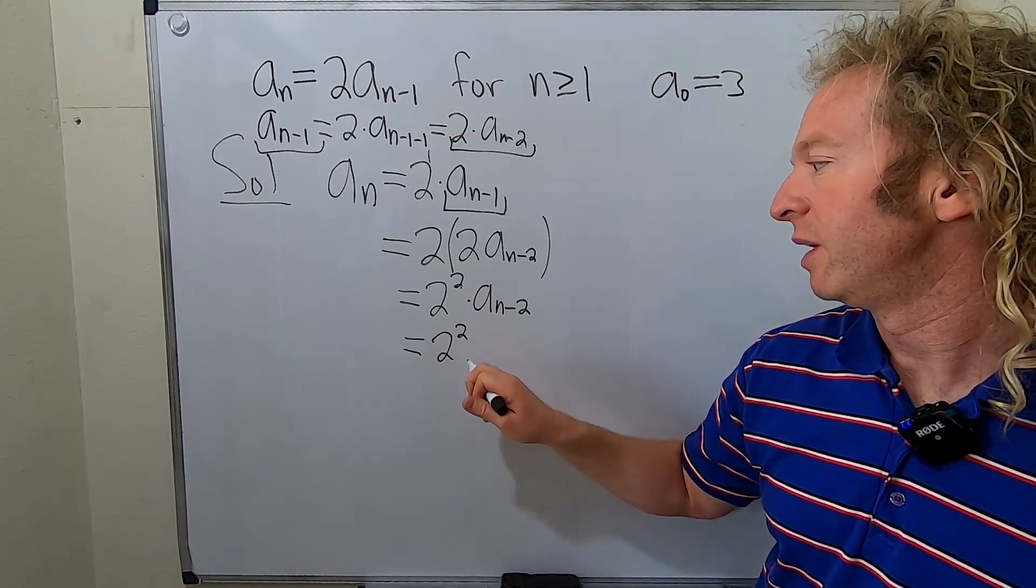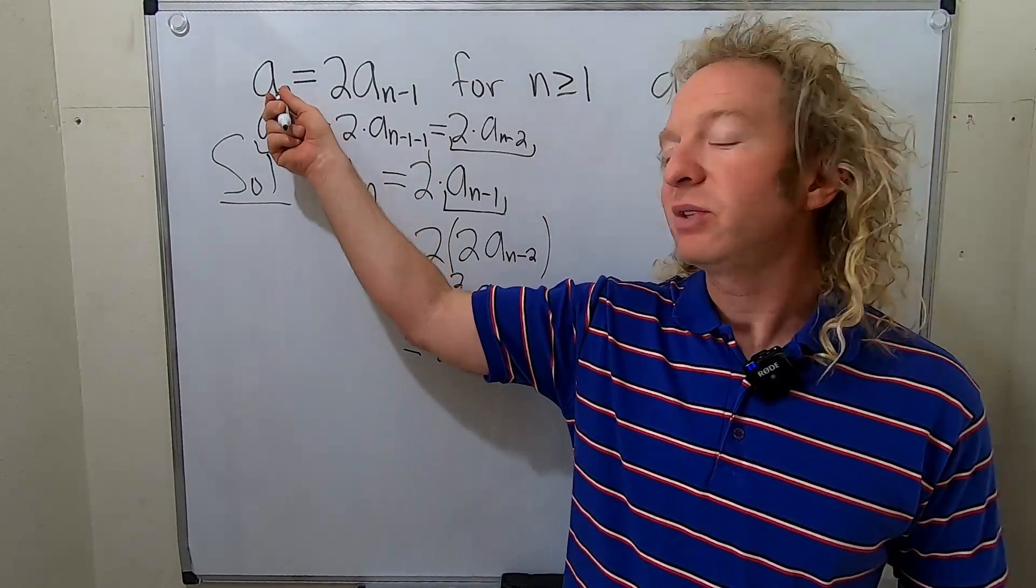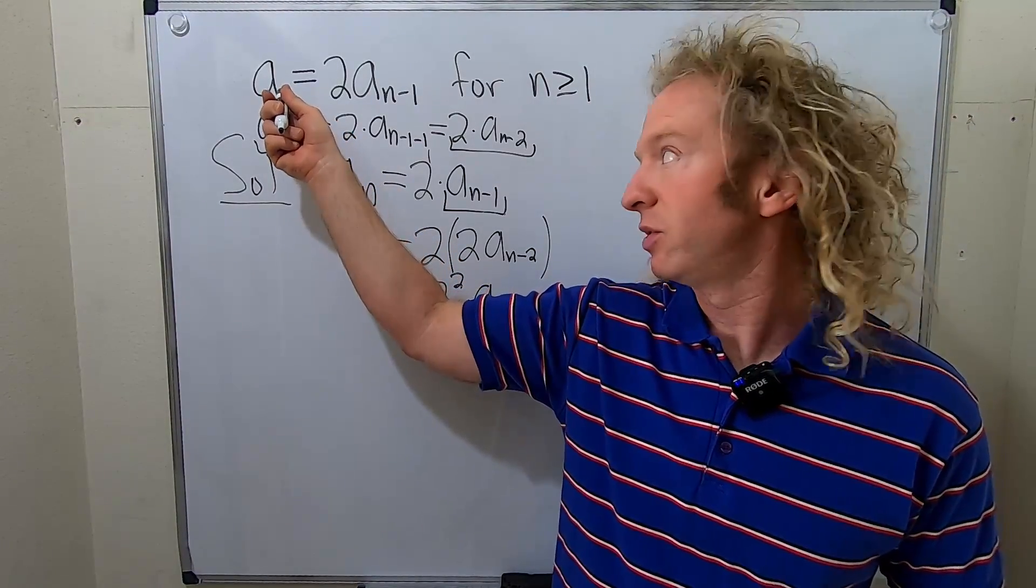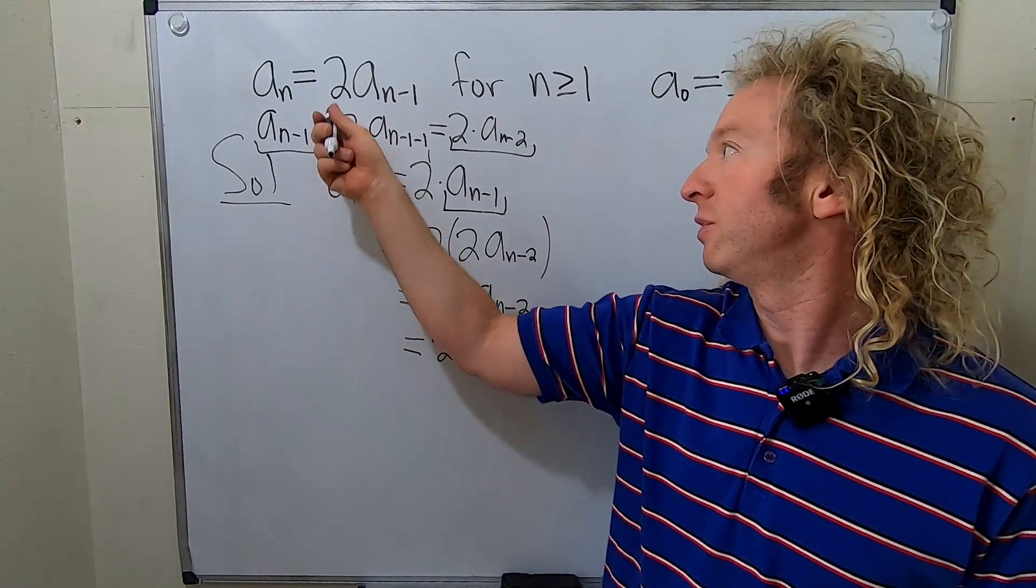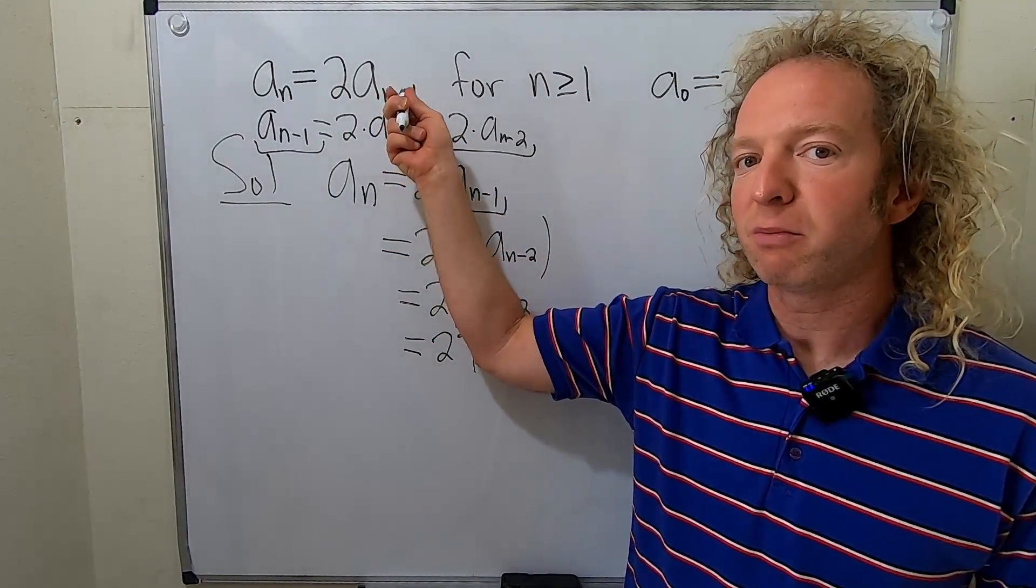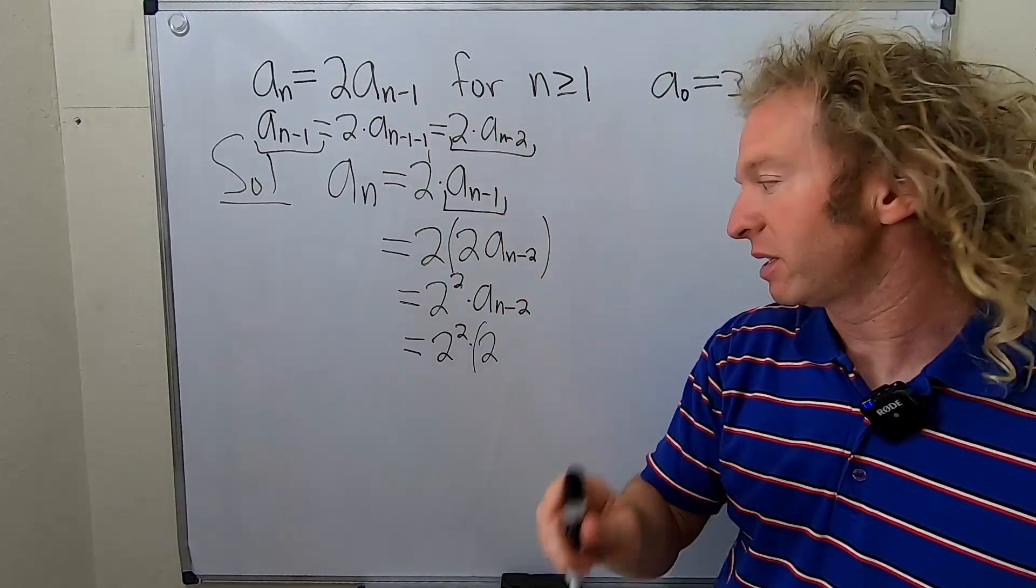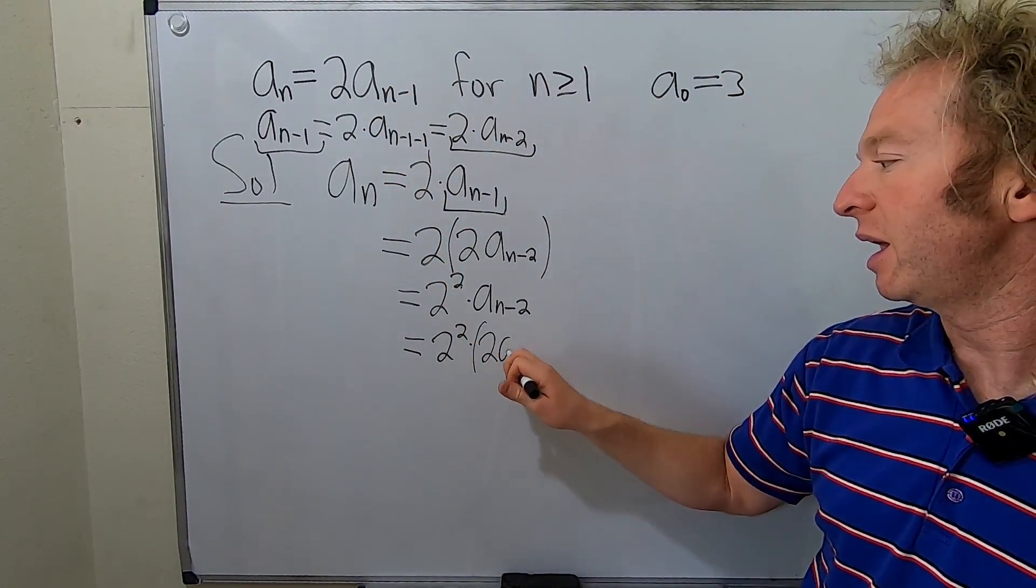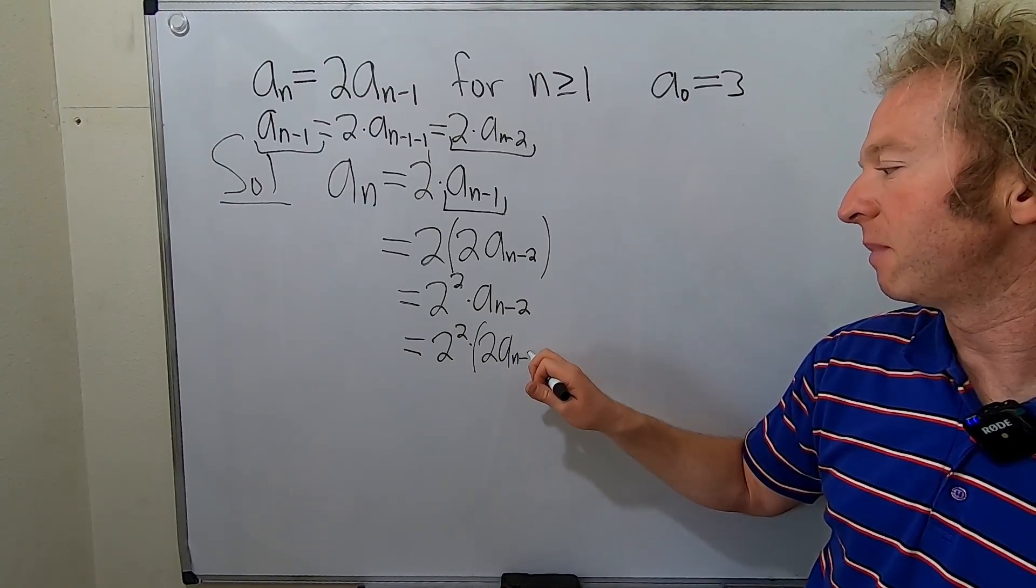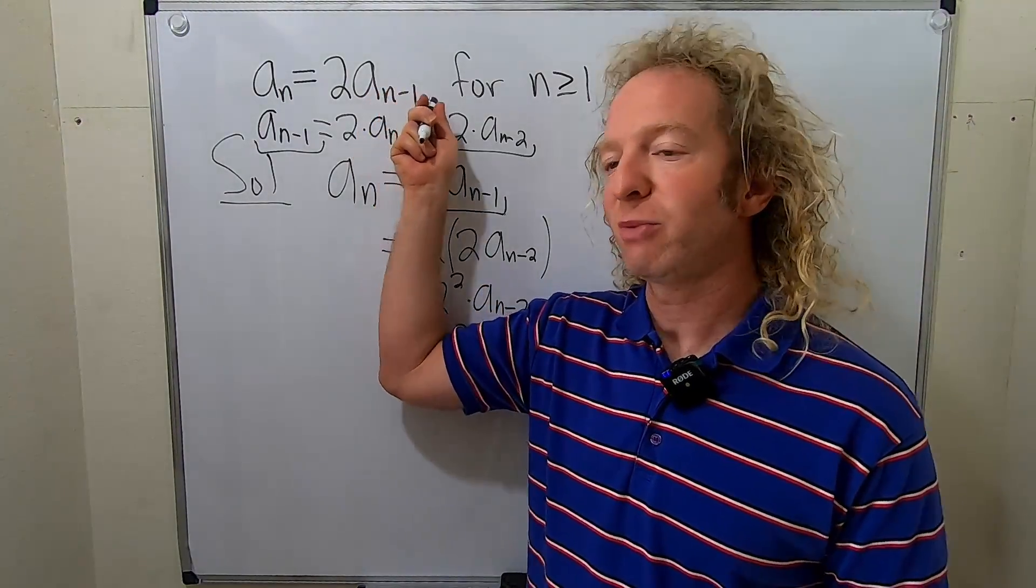So we have 2 squared. Let's backtrack again. Now we're going to replace all of the n's here with n minus 2s. So we still have the 2, and then we have n minus 2 minus 1. So n minus 2 minus 1 is n minus 3. So this is a_{n-3}, because it's n minus 2 minus 1.